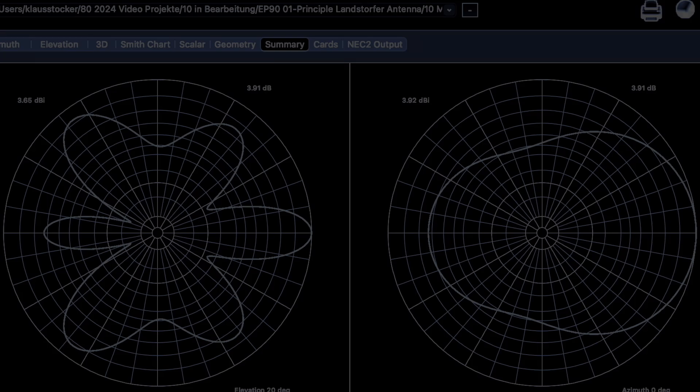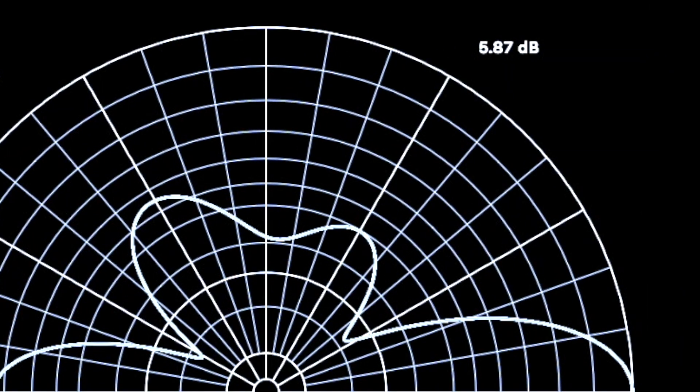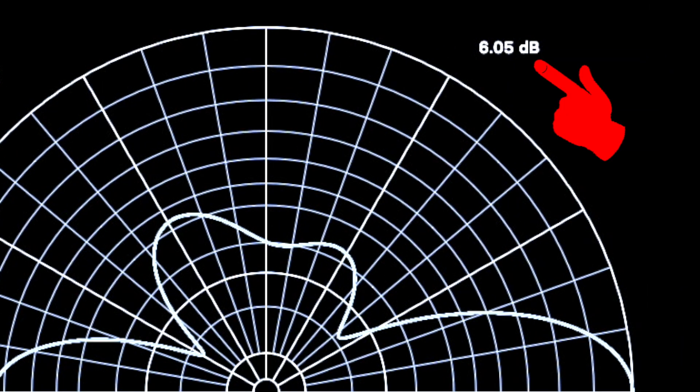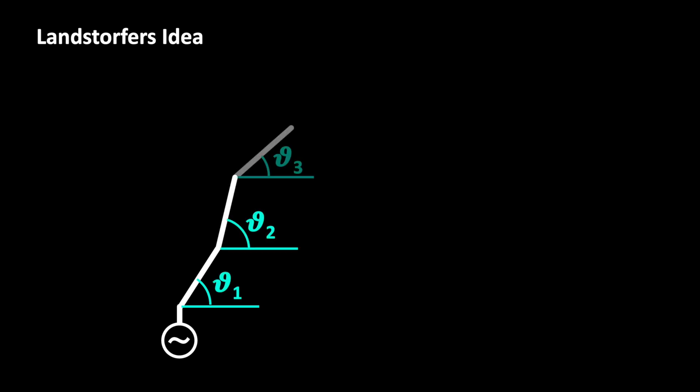Is this really the optimum or can we find something better? We now take up Lansdorfer's idea creating the antenna from several segments varying all segments pitch angles and length.